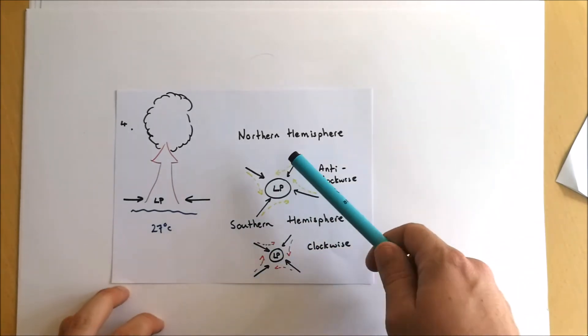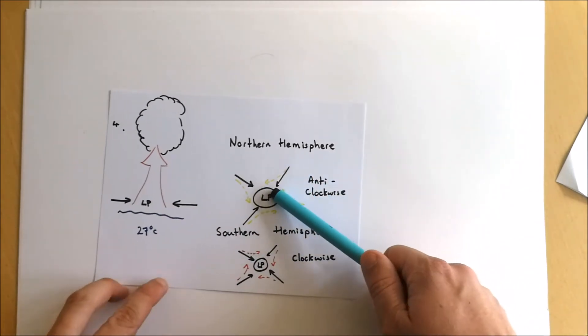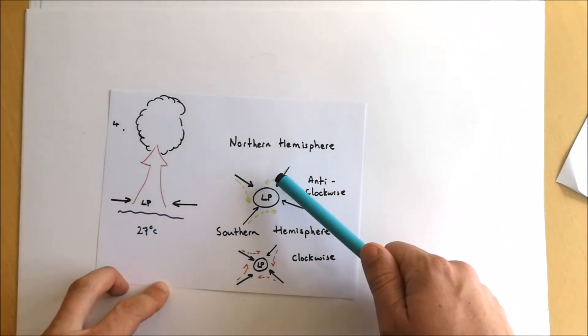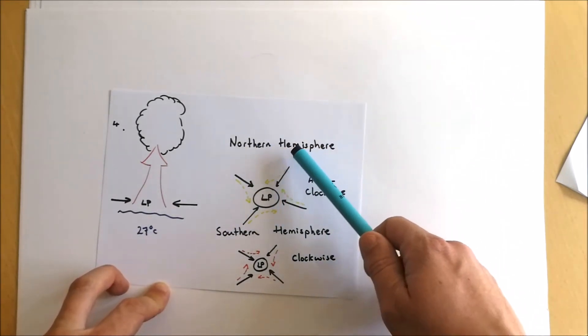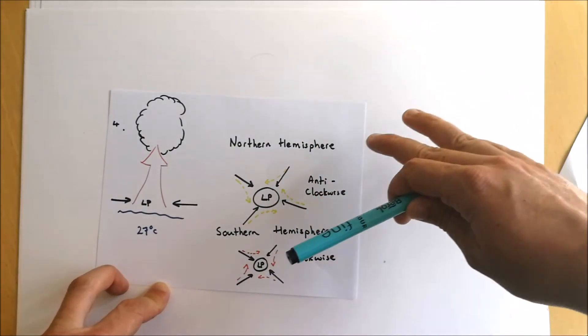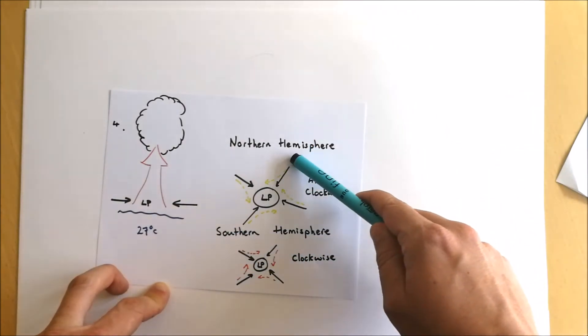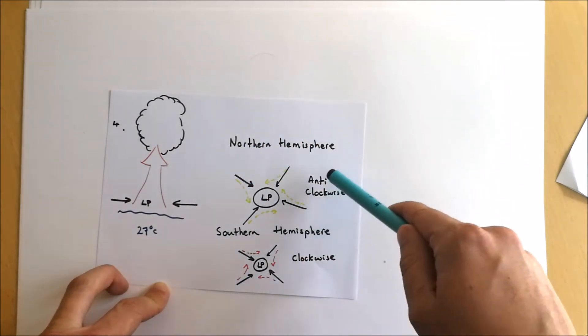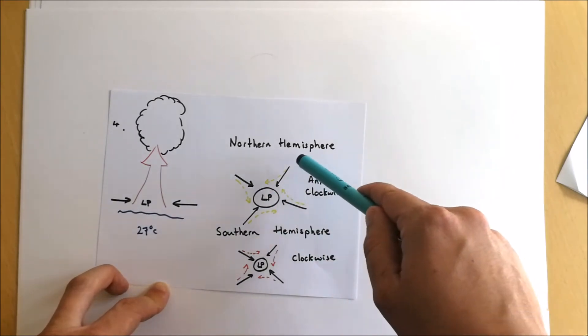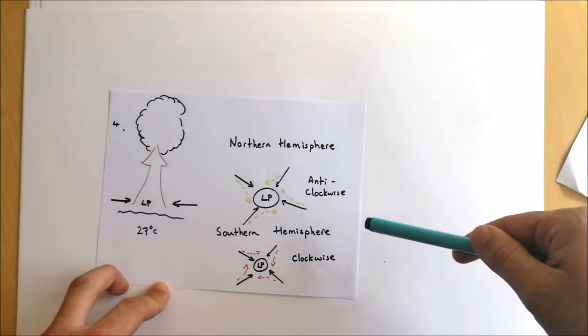This is when the Coriolis force comes in. As that air moves into the low pressure depending on what hemisphere it is, it's going to be deflected. So in the northern hemisphere, that air is moving into the low pressure area and the air is deflected due to the Coriolis force to the right. That motion deflected to the right causes the air to start spinning around that low pressure area in an anti-clockwise motion.